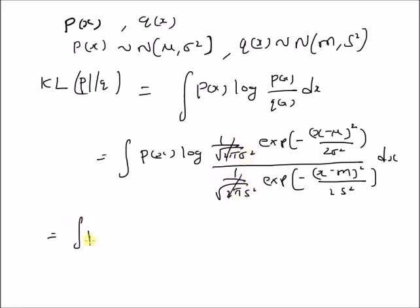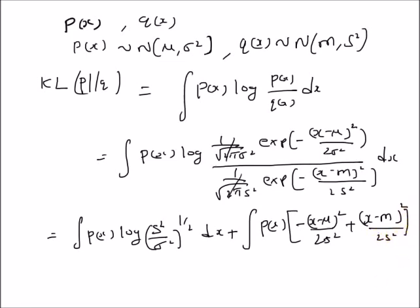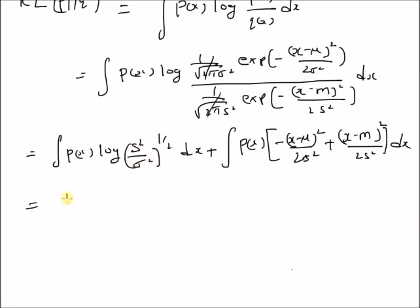So we have the integral of P of x times the logarithm of s square by sigma square to the power 1 by 2, dx. Next we have these two terms: the log of exponential terms simplify, and we are left with plus the integral of P of x times minus x minus mu whole square by 2 sigma square, plus x minus m whole square by 2 s square, dx. So this gives 1 by 2 logarithm of s square by sigma square.